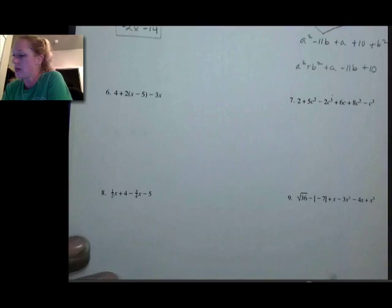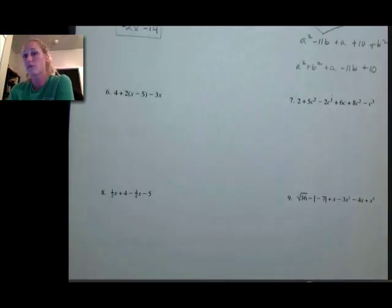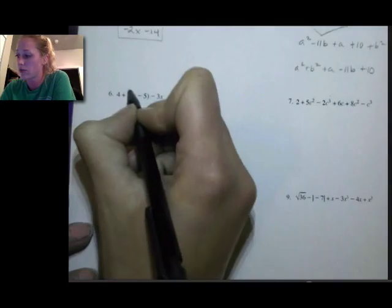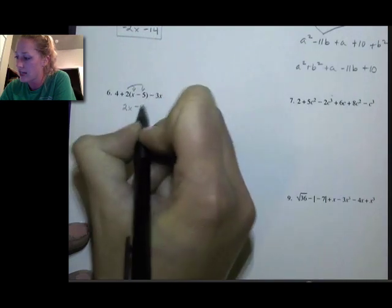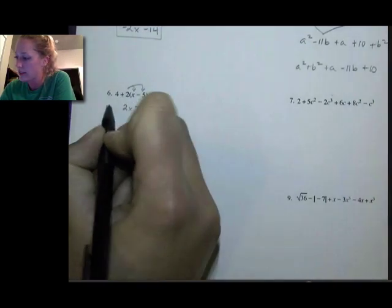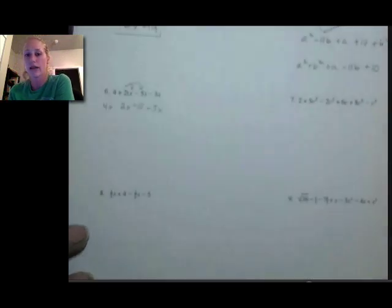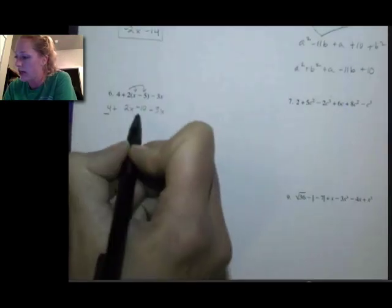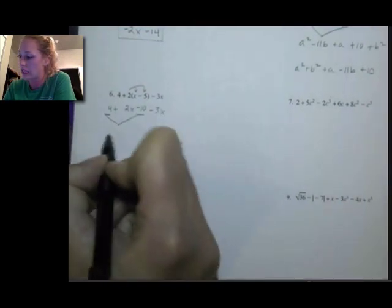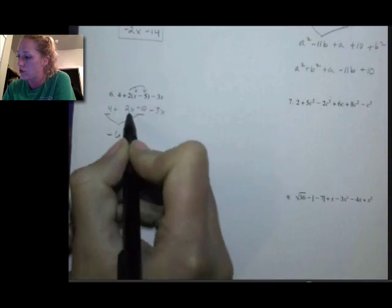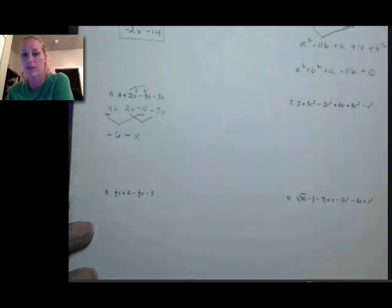Another example: here I want to take care of the distributive property and get rid of my parentheses before I start combining like terms. So I'm going to take 2 times x, and 2 times negative 5 is negative 10, and rewrite the rest. Now I'm going to combine like terms: 4 minus 10 — those are both regular numbers — so 4 minus 10 is negative 6. And then 2x minus 3x, they both have x's, is negative 1x or negative x.